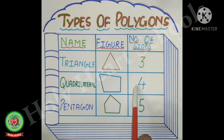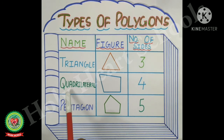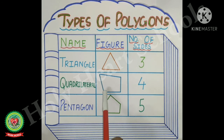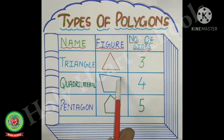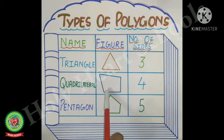Next, the polygon which has four sides is called a quadrilateral. It has one, two, three, four sides. So it is a quadrilateral.